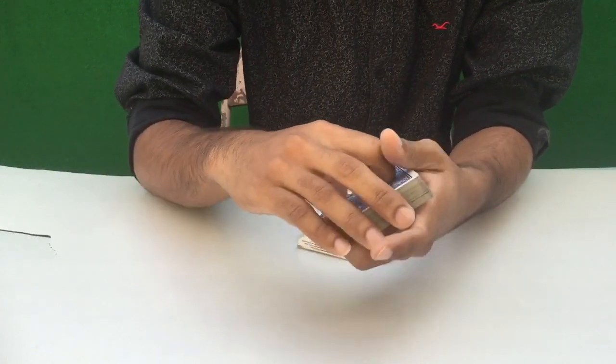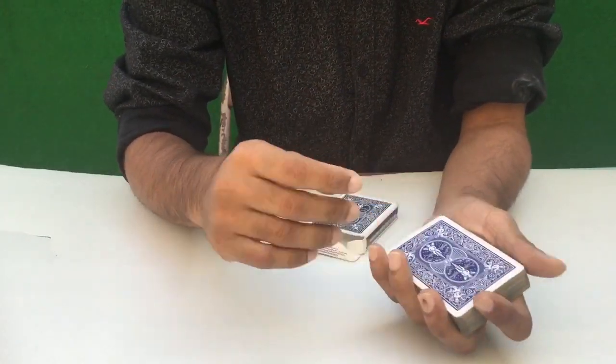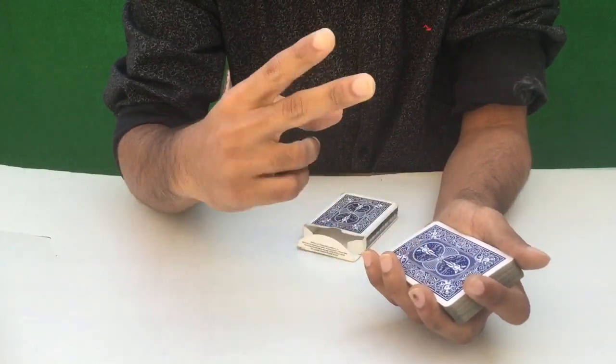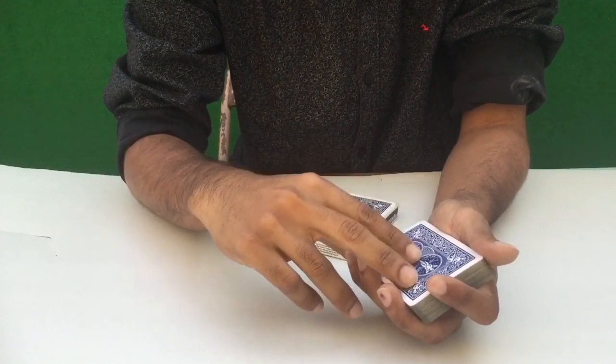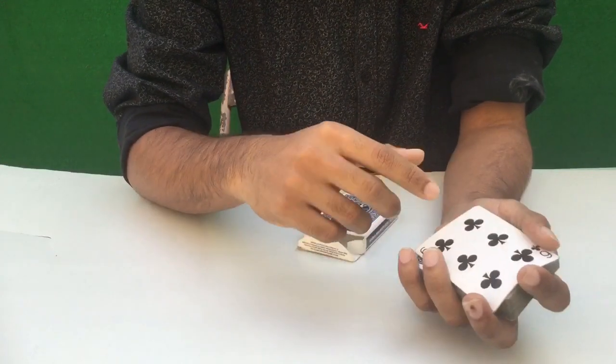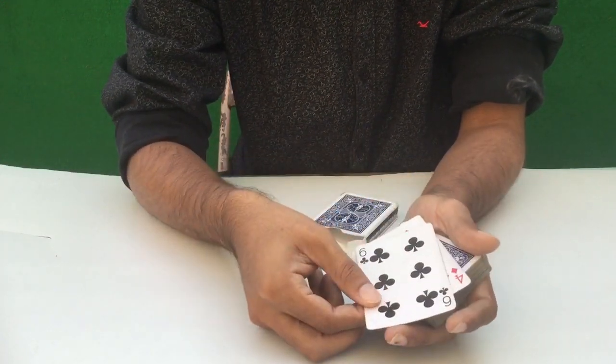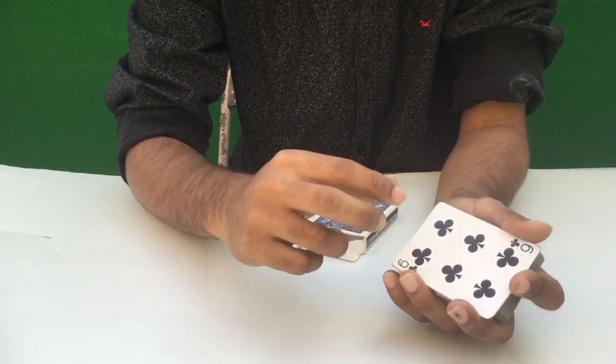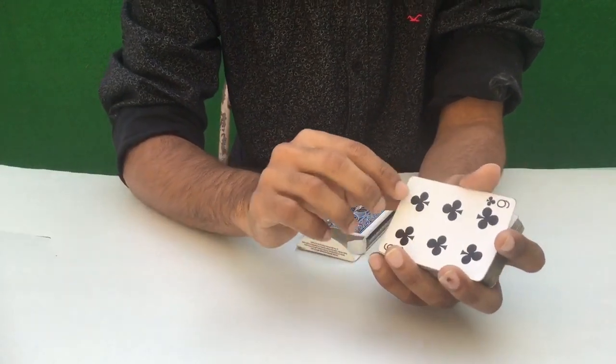Now, the main trick is the double lift. Double lift means to lift two cards. This means it looks like one card. Actually, I have two cards, but it looks like I have one card. This is the second card.